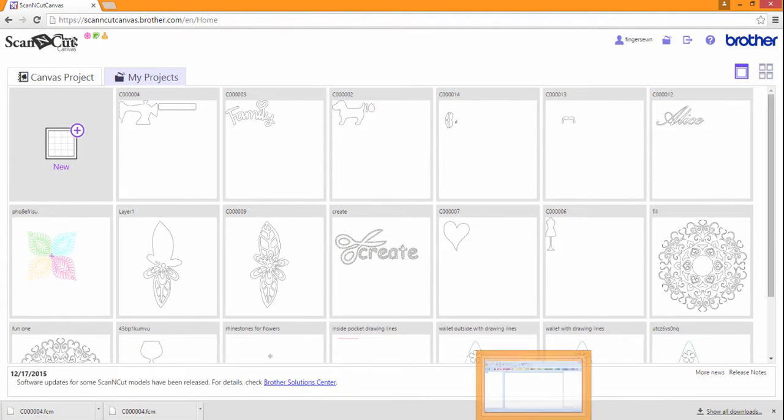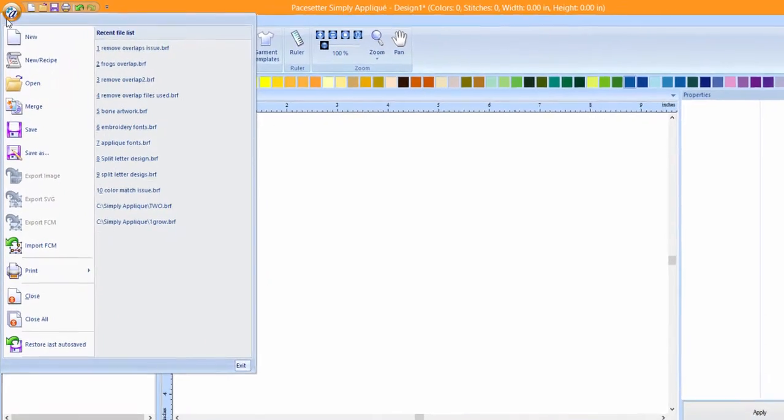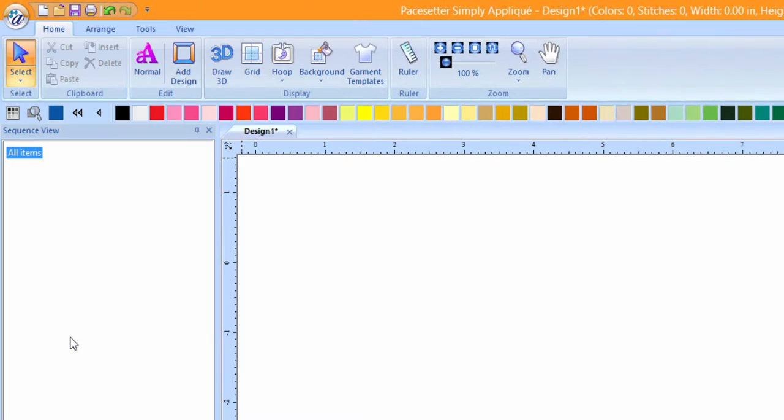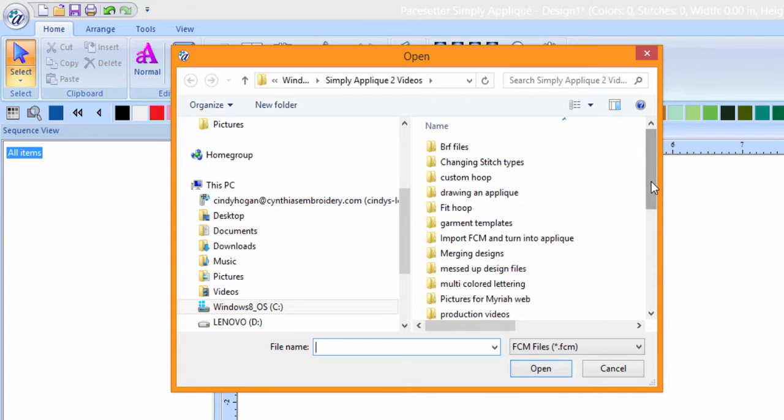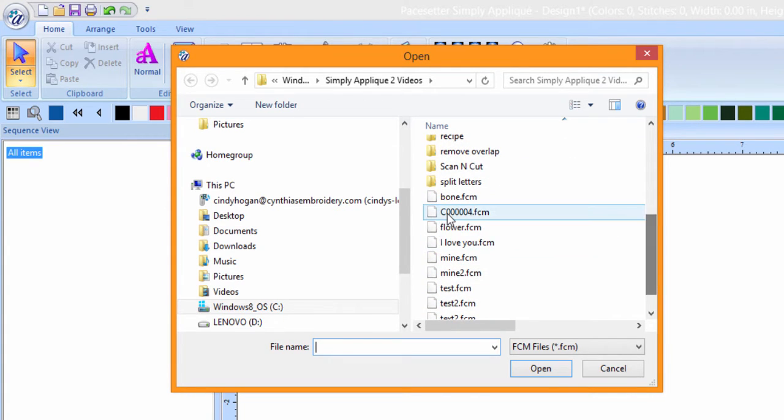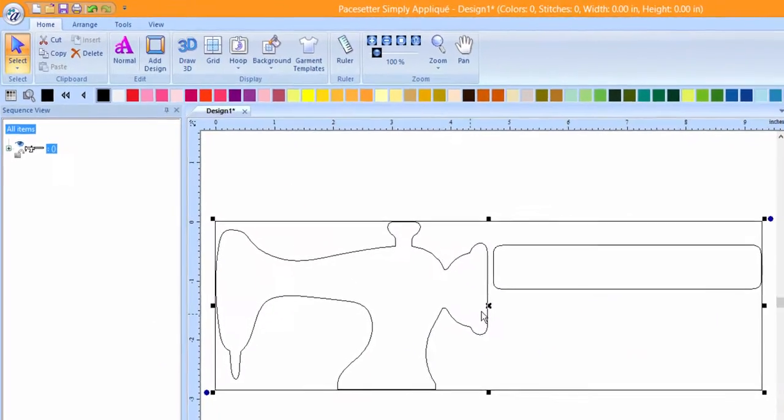Let's click on Simply Applique. Go to the File pull-down menu, choose Import FCM. Locate the FCM file that we just downloaded and select Open. The FCM file will appear on the screen.